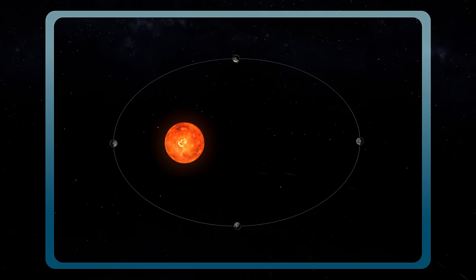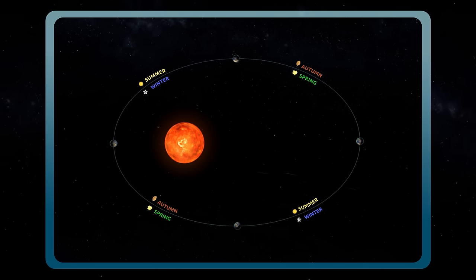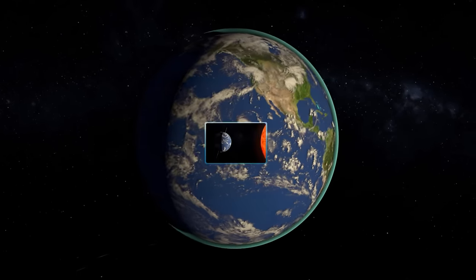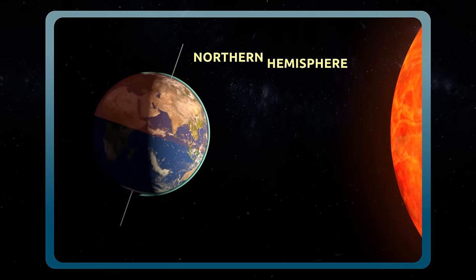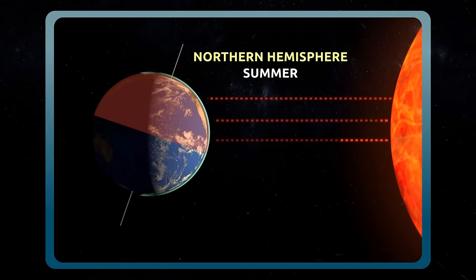Thanks to revolution and the inclination of the rotation axis of the Earth, we have four seasons: spring, summer, autumn and winter. The more the hemisphere is inclined towards the Sun, the more directly the sunlight reaches the Earth's surface. It's warmer and that's why it's summertime.